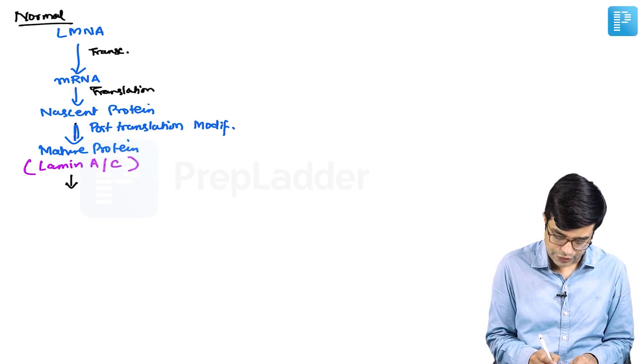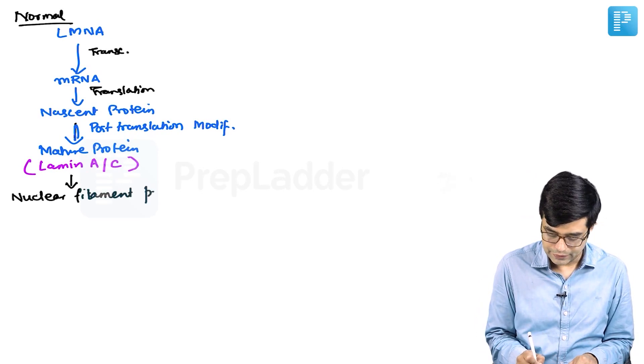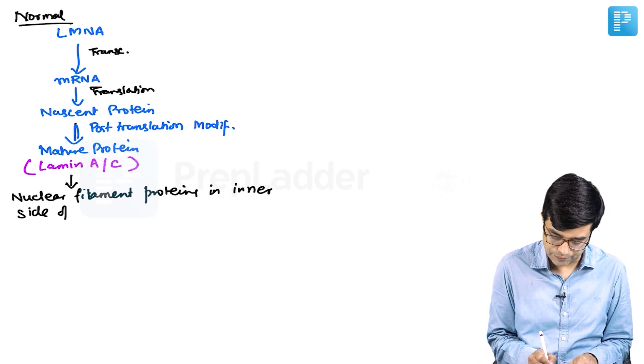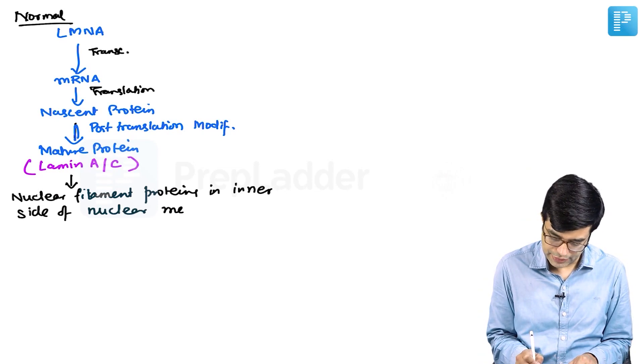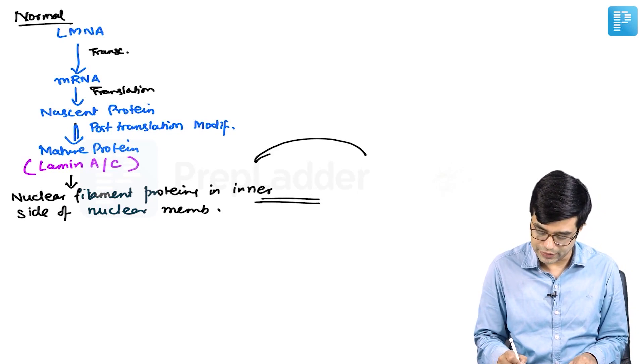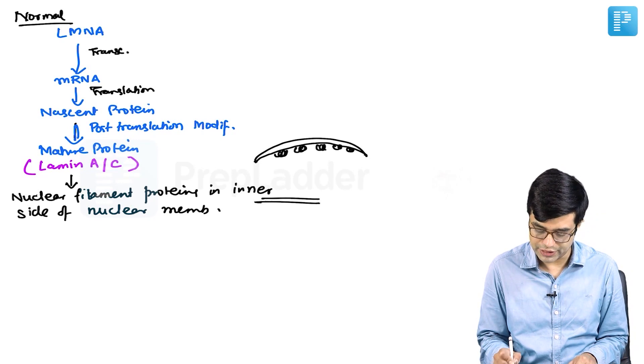Lamin A or C are a type of nuclear filament proteins which are present on the inner side of the nuclear membrane. These nuclear filament proteins are present on this side of the nuclear envelope.